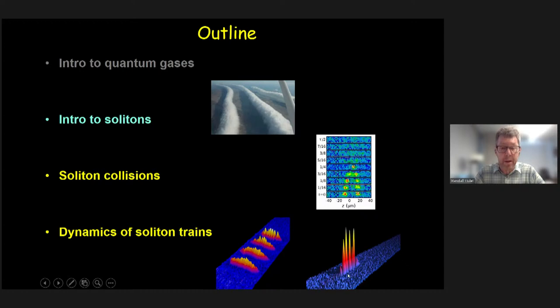I'll talk about soliton collisions, an experiment in our group, and also the dynamics of soliton trains. Often these observations of matter wave solitons result in not just one soliton, but a train of solitons, as indicated here.